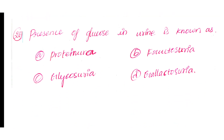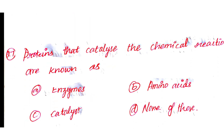Question number 26: Presence of glucose in urine is known as. Option A: Proteinuria. Option B: Fructosuria. Option C: Glycosuria. Option D: Galactosuria. The answer is Option C: Glycosuria.